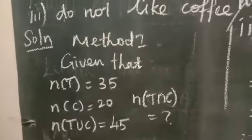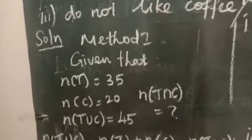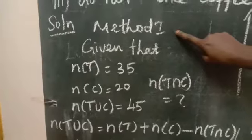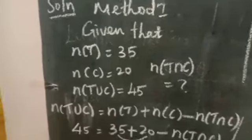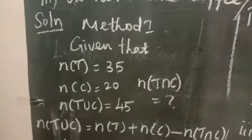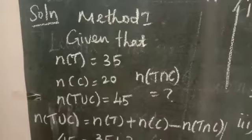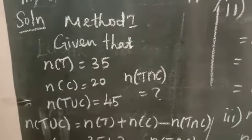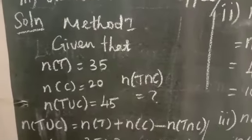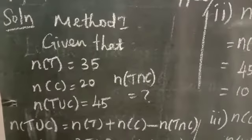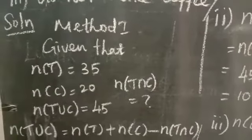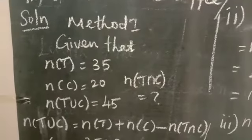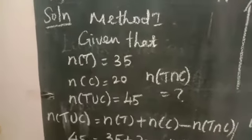I already told in the sum to have two methods. The first method: if A intersection B is given, you use the Venn diagram — that is easy. If A intersection B is not given, you use the formula method — that is easy to find out the solution.